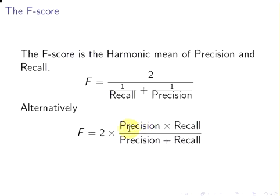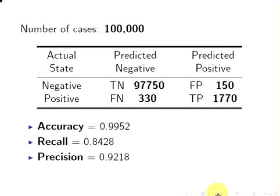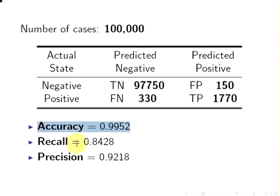The formula is two times precision times recall, divided by precision plus recall. Here are some values from an example used in previous presentations. The accuracy metric is 0.9952 — that's the total proportion of correct predictions — and it seems quite high.